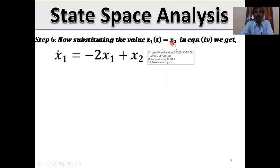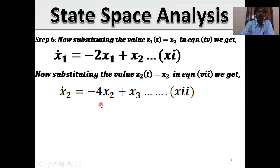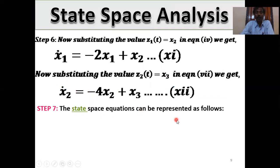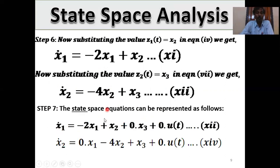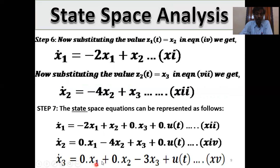Now substituting z1(t) = x2 and z2(t) = x3, we get: ẋ1 = −2x1 + x2, ẋ2 = −4x2 + x3, ẋ3 = −3x3 + u(t). These are all the state equations. The state space equations can now be represented in matrix form.